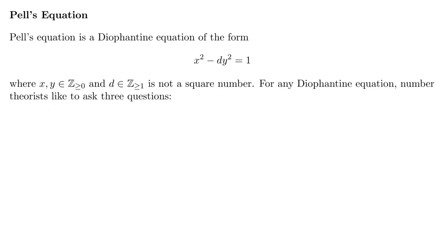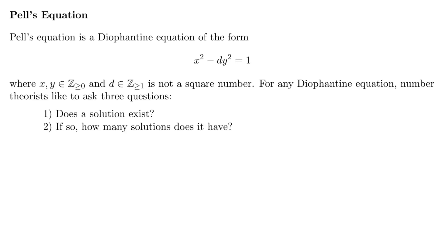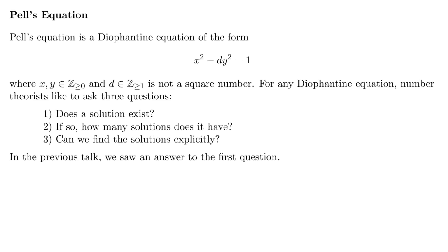For any Diophantine equation, number theorists like to ask the following three questions. The first: does a solution exist? The second: if so, how many solutions does it have? And third: can we actually find these solutions explicitly? In the previous talk, we saw an answer to the first question for Pell's equation, and in this one I'll be answering questions 2 and 3.